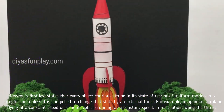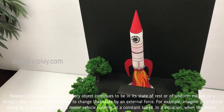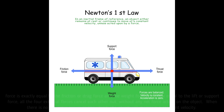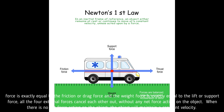For example, imagine an airplane flying at a constant speed or a motor vehicle running at a constant speed. In a situation when the thrust force is exactly equal to the friction or drag force, and the weight force is exactly equal to the lift or support force, all four external forces cancel each other out without any net force acting on the object. When there is no net force acting on the object, the object will maintain a constant velocity.